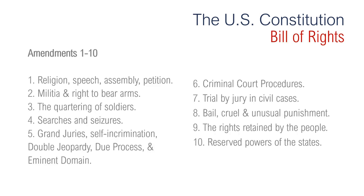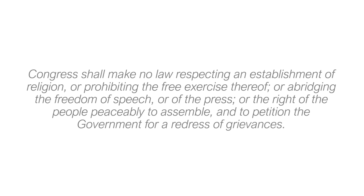Now we're going to take a look at the Bill of Rights, which was passed immediately following the ratification of the Constitution and contains the first 10 amendments. The First Amendment is regarding the freedom of religion, speech, assembly, and petition. It says Congress shall make no law respecting an establishment of religion or prohibiting the free exercise thereof, or abridging the freedom of speech or of the press, or the right of the people peaceably to assemble and to petition the government for a redress of grievances. Congress may not create an official church or enact laws limiting the freedom of religion, speech, the press, assembly, and petition.